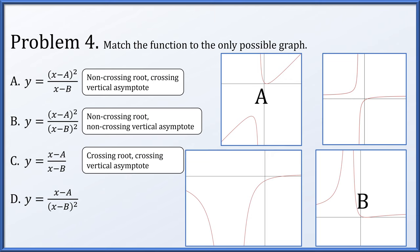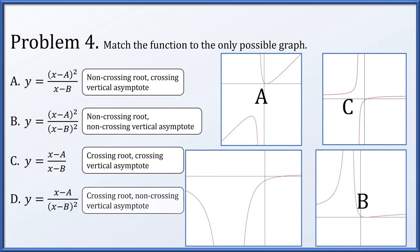For C, both root and asymptote have multiplicity 1, so both are crossing. That's the option in the upper right — a single root where the graph changes sign, and a single vertical asymptote where the sign also changes. For D, the numerator has a root of multiplicity 1 (crossing root) and the denominator has a root of multiplicity 2 (non-crossing asymptote). That matches the only remaining graph: a single crossing root and a vertical asymptote with the same sign on both sides.